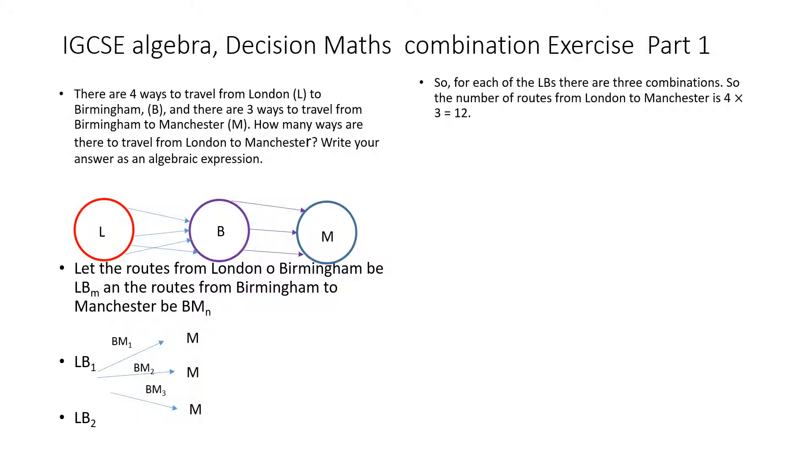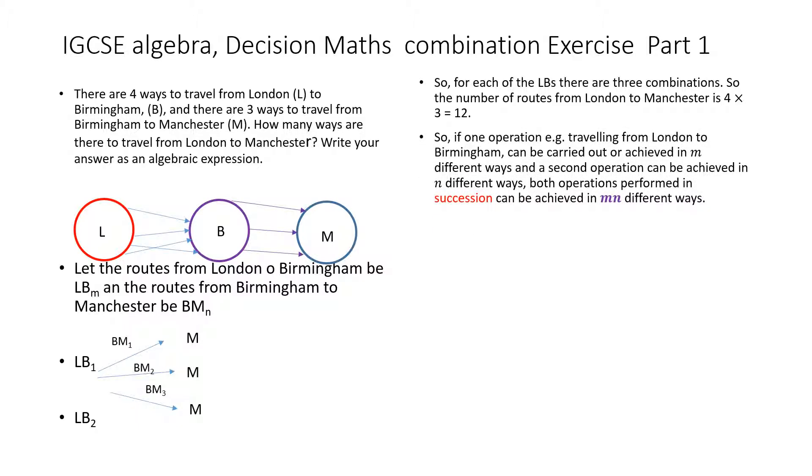In algebraic terms, if I perform two operations in succession with M ways for the first operation and N ways for the second operation, the number of ways to combine both operations in succession is M×N, as required.